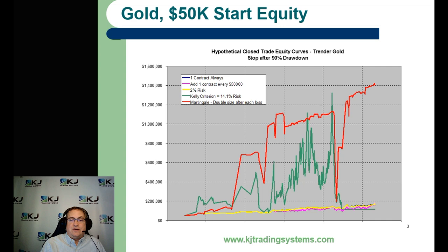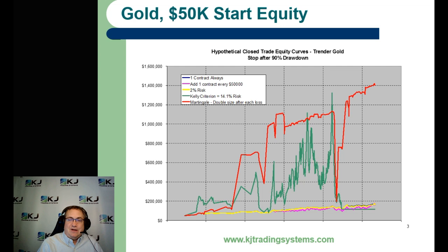With a different starting equity, the first three approaches are all about the same again — not too exciting. It's the Kelly and the martingale that are really going crazy. With the martingale and Kelly you're over a million dollars equity and then you drop down to about 200,000 very quickly. That's kind of nuts, but if you like it, go for it.